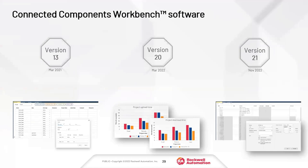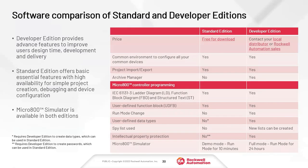Before we go to the demo, let's talk about CCW — Connected Components Workbench software. Version 21 is the latest. We went from version 13 in March 2021 to version 20 last year to version 21 late last year — don't worry about versions 14 through 19. There are two versions: Standard Edition, which is completely free with no caveats, and Developer Edition which comes at a relatively low cost.